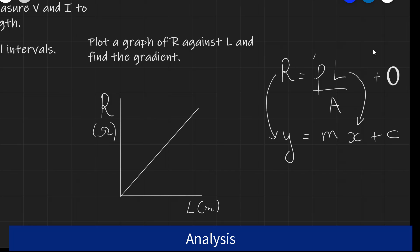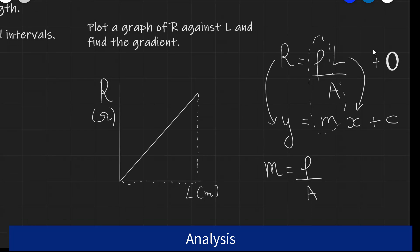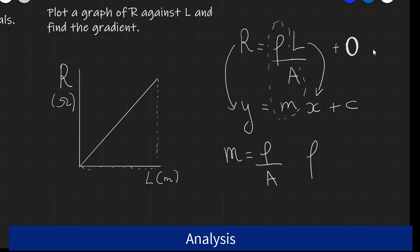We're going to find that the gradient will be equal to the resistivity divided by the cross-sectional area. So our gradient M is simply equal to the resistivity divided by the area. We're going to use our standard rules finding the gradient and I'm going to make my gradient triangle as large as possible to reduce the percentage uncertainty. The resistivity of the material is equal to the gradient M multiplied by the cross-sectional area.